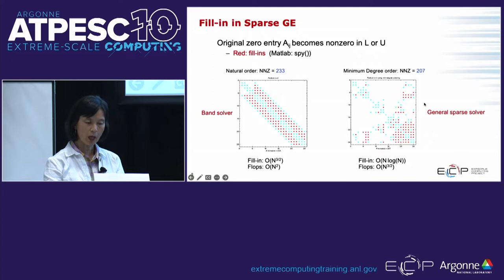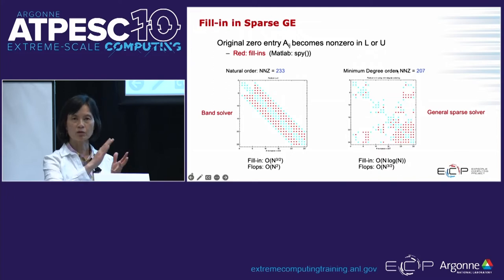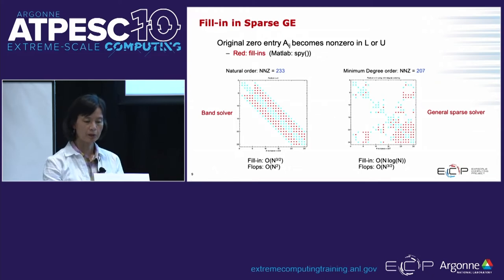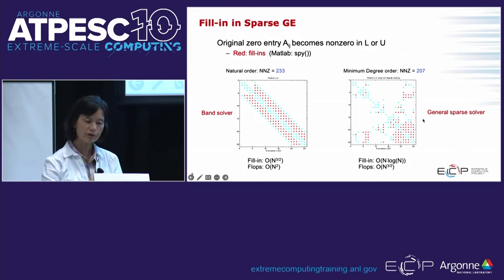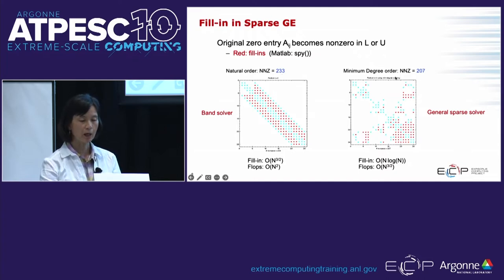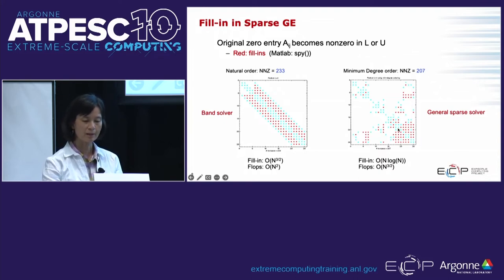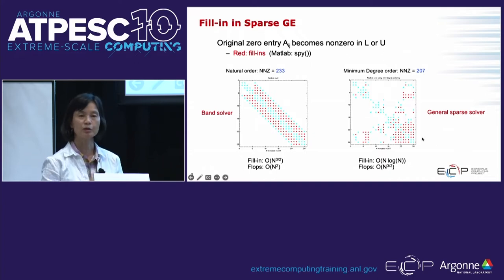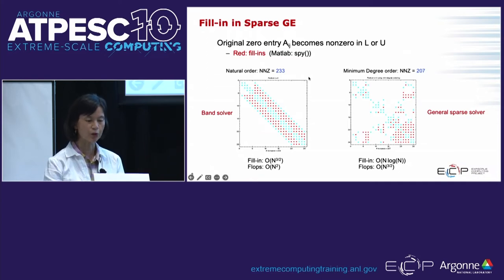In the early days, people used band solvers — keeping everything inside the bandwidth to handle fill-in. LAPACK has a band storage format. With band storage, the fill-in is order n to the 3/2 and flops are order n squared. But if you change the ordering — using for instance minimum degree ordering — you can see that fill-in is reduced: from 223 on the left to only 207 on the right. When you scale up, this gap becomes huge.